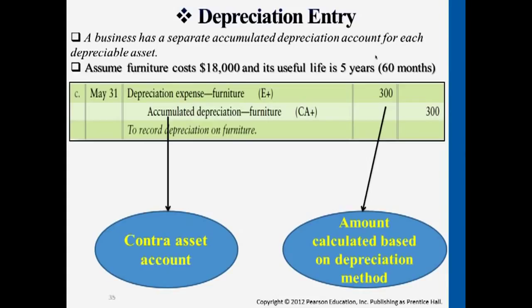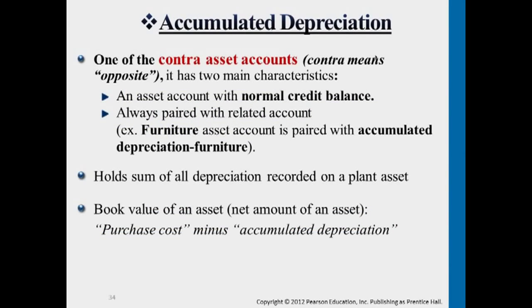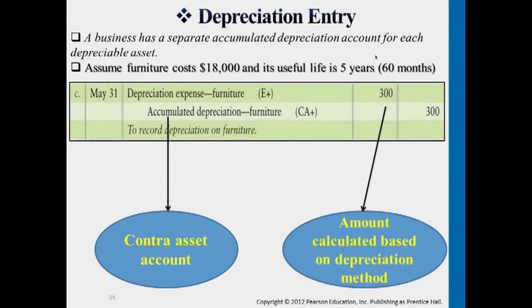Depreciation expense is debited because it's an expense that accumulates. Accumulated depreciation is a contra asset account — 'contra' means the opposite. It still falls under the asset category because it captures the asset's reduced value for furniture, building, machinery, and other long-term assets. Its normal balance is the credit side, but it's still part of the asset family. When you see an accumulated depreciation account, the business has some long-term assets, and matching those two accounts together lets you figure out the book value of the asset.